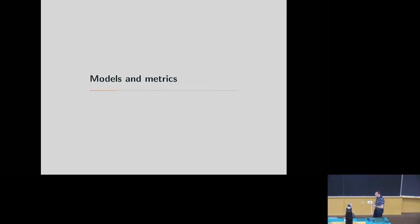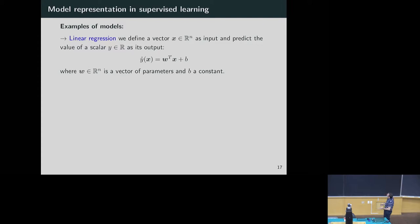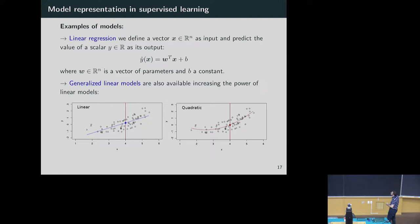Let's talk about models and metrics, and what are the issues with these techniques. When we implement a machine learning algorithm, we usually follow this workflow: we have data, a model, a cost function, and an optimizer — all put together in a training. After training, we generate a best model for inference. A simple example is linear regression — already an example of building a model and training on data. The limitation is that we are locked by linearity.